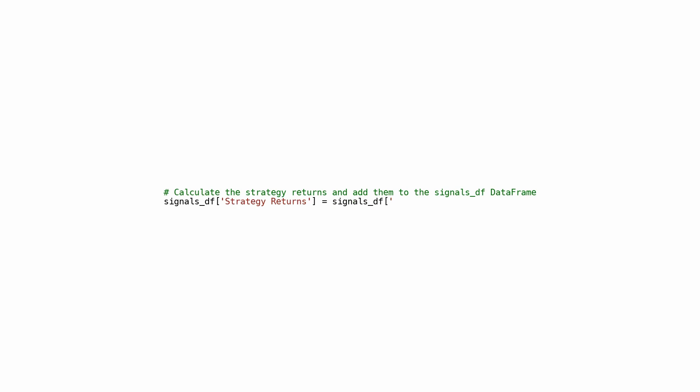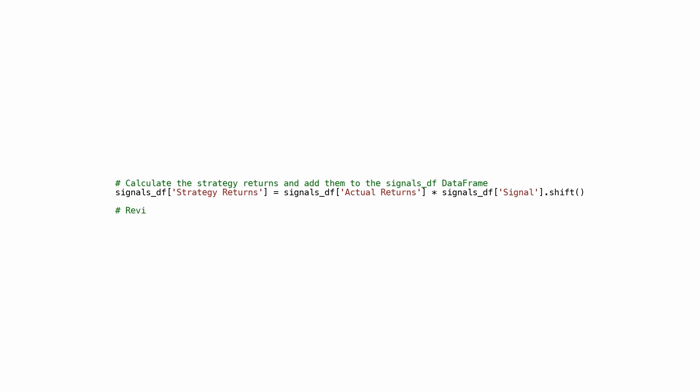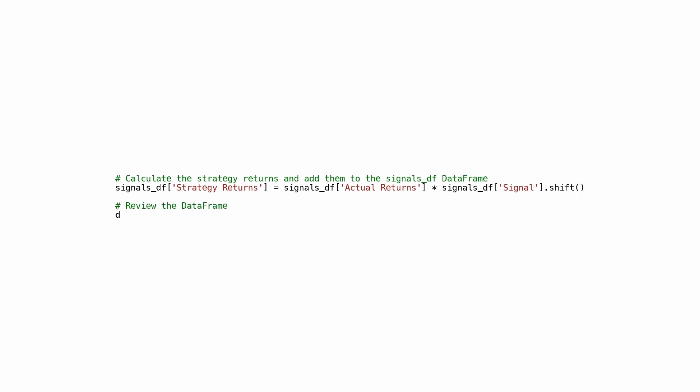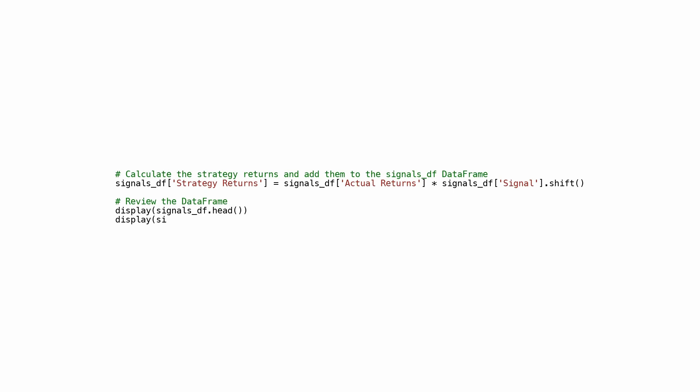The strategy returns are calculated by multiplying the actual_returns column with the signal column shifted by one row, taking into account the previous day's signal to determine the current day's strategy returns. The result is added as a new column called strategy_returns in the signalsDF DataFrame. This allows for comparison of the strategy returns with the actual returns to assess the effectiveness of the chosen strategy. The code then displays the first and last few rows of the updated DataFrame for review.